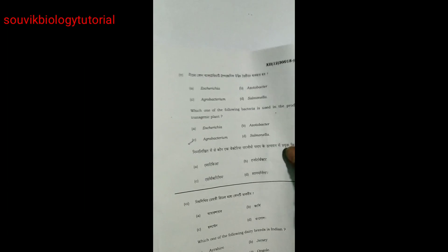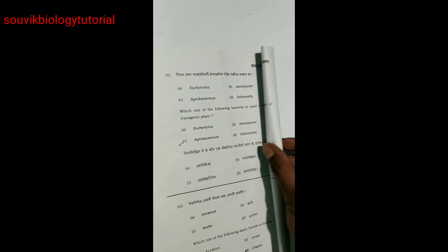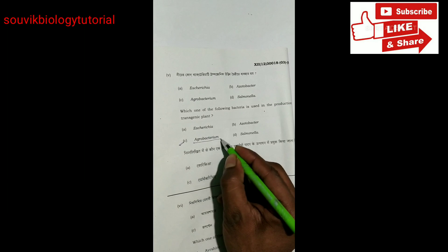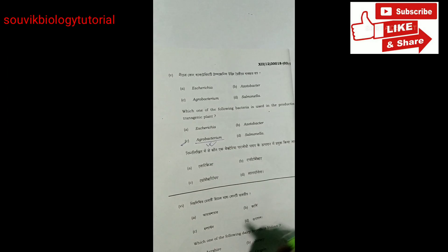Which one of the following bacteria is used in the production of transgenic plant? We all know Agrobacterium tumefaciens. So Agrobacterium is the right answer.